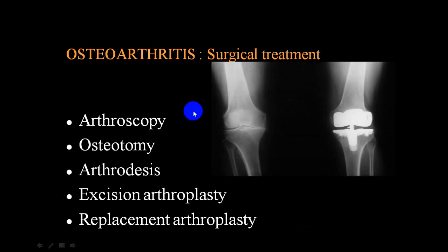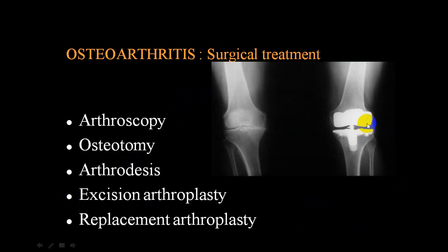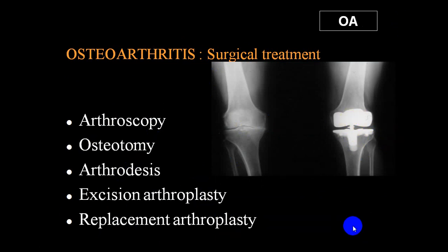Surgical options for OA include arthroscopy, debridement, corrective alignment surgery, osteotomy, arthrodesis (joint fusion), excision arthroplasty, and partial or total joint replacement. Cartilage transplantation and regenerative medicines are partially effective. Total joint replacement is the last resort.